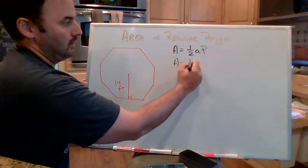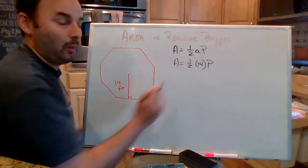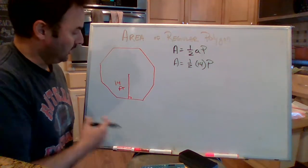Okay, so the area is one half. We have the apothem, 14. Now we got to find the perimeter. Okay, same thing.